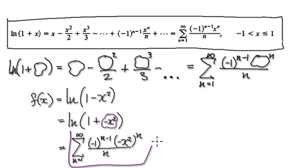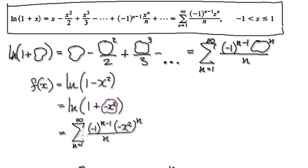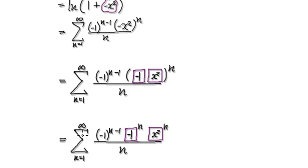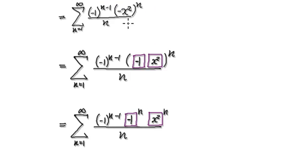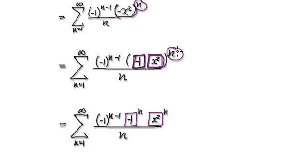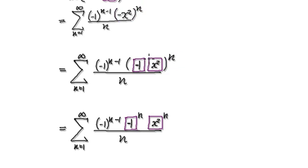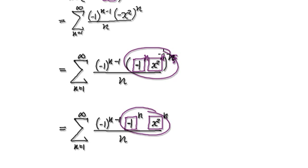Now it's just a matter of tidying this up. To tidy this up, imagine minus x squared as negative 1 times x squared, and then you've got that to the power of n. So now this will become negative 1 to the power of n. That will then take you to here, and from here that will then take you to here.